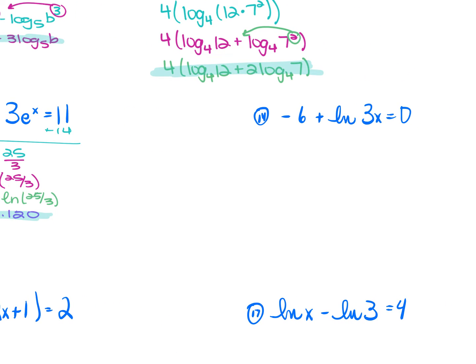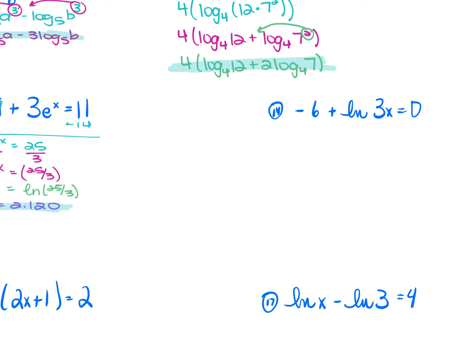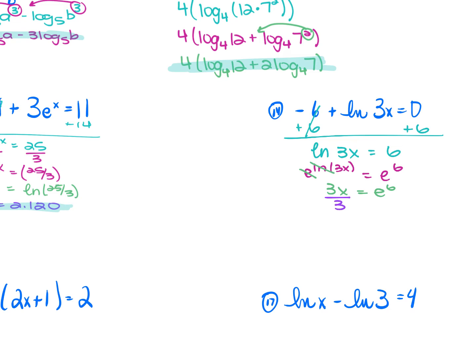For number 14: −6 + ln(3x) = 0. Isolate the LN by adding 6 to both sides: ln(3x) = 6. Raise e to both sides: e^(ln(3x)) = e⁶. E and LN cancel, leaving 3x = e⁶. Divide each side by 3. Using your calculator, e⁶ ÷ 3 ≈ 134.476.